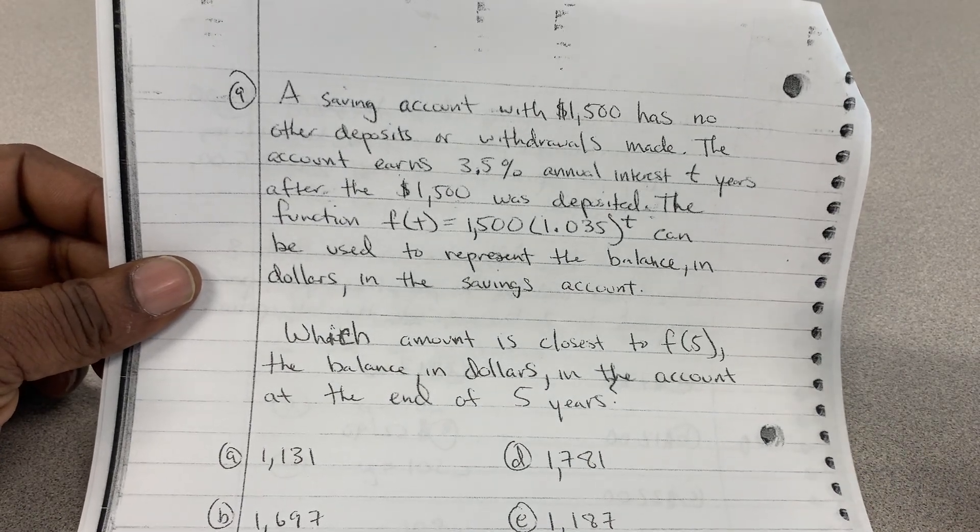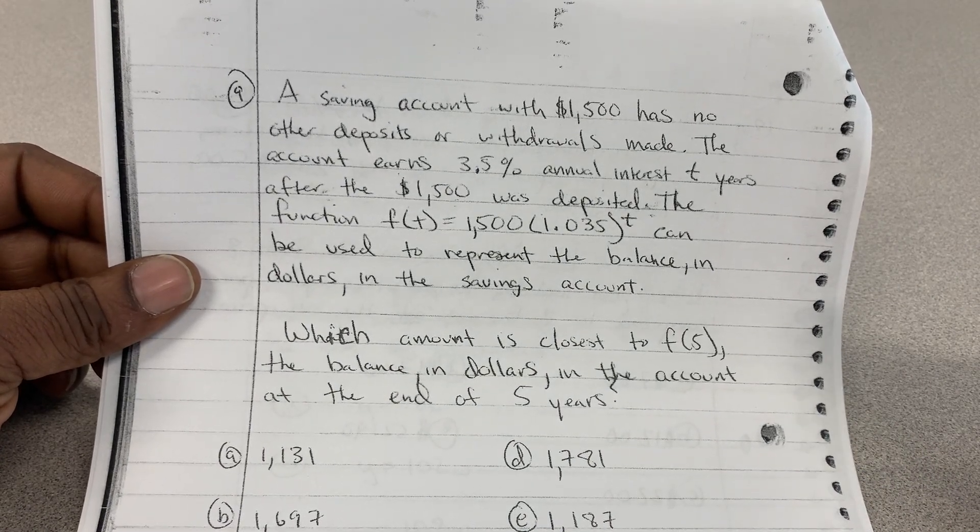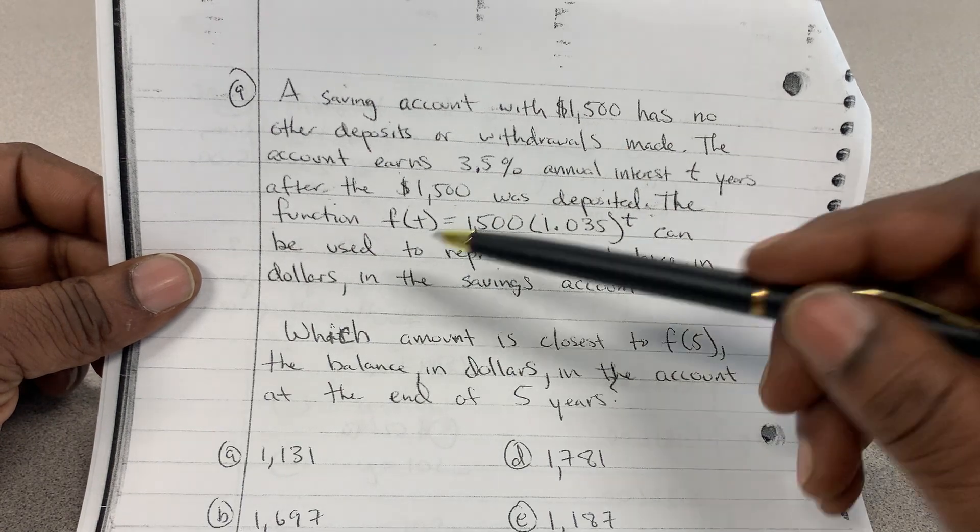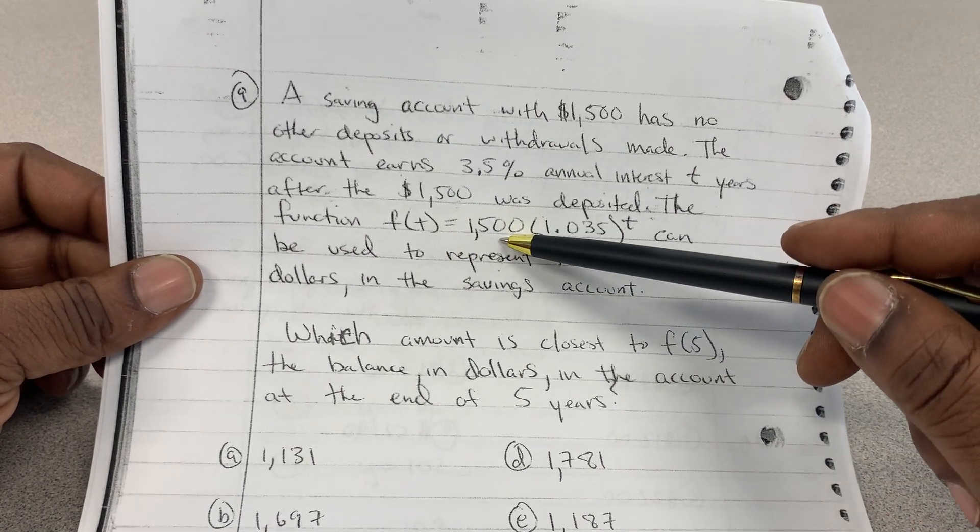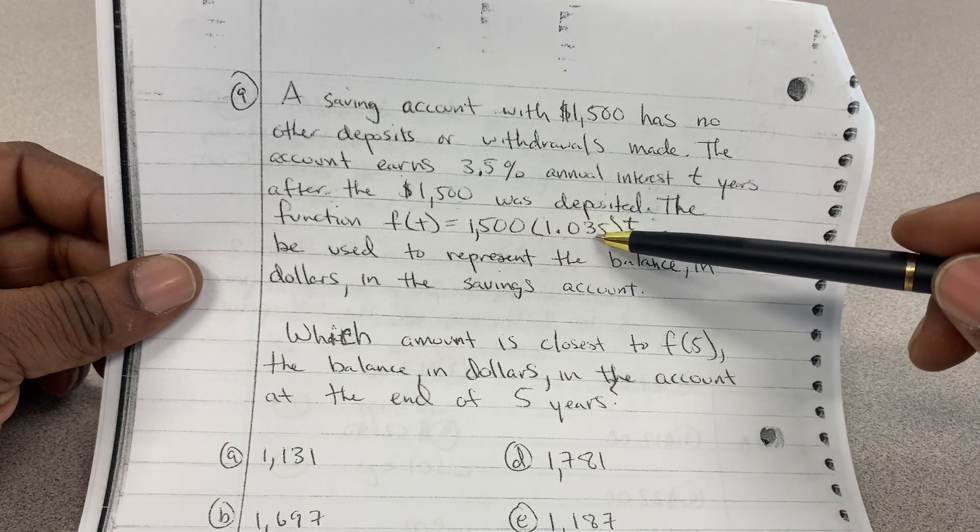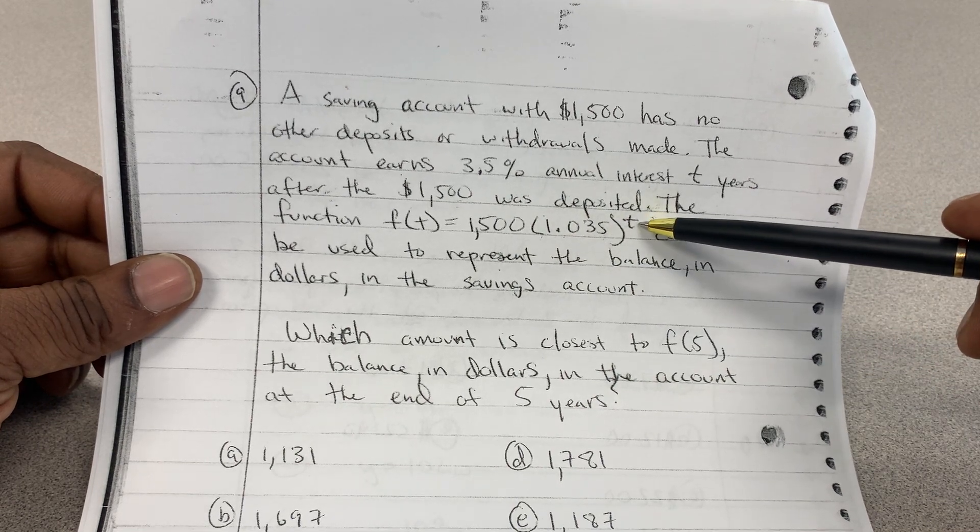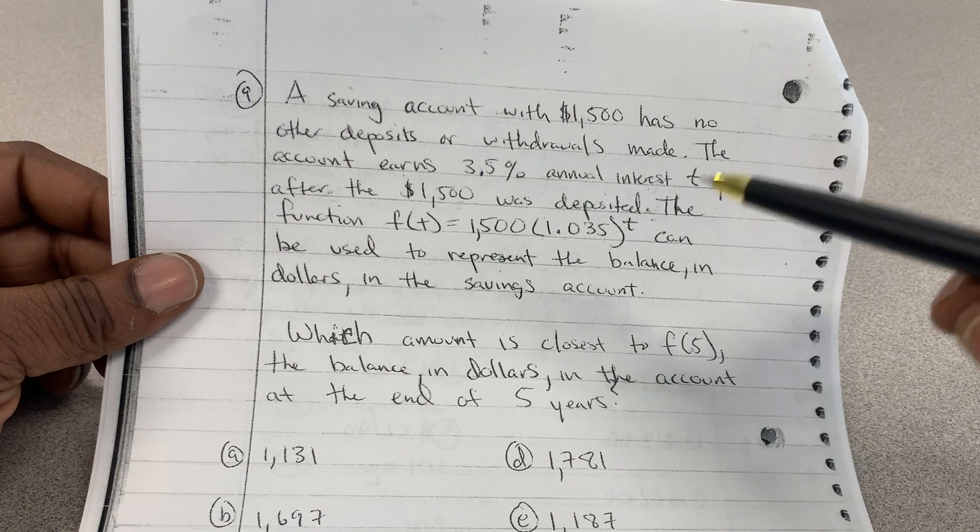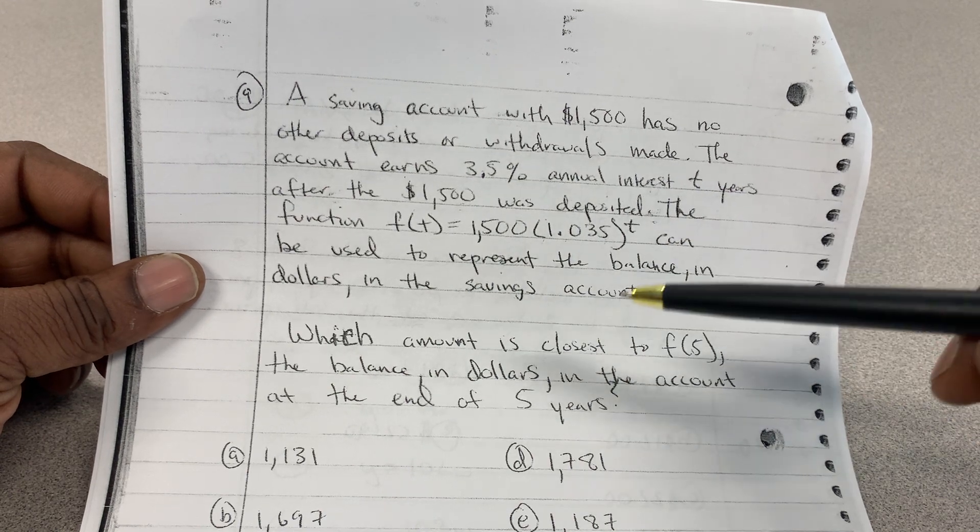Two years after the $1,500 was deposited, the function f(t) = $1,500 × 1.035^t can be used to represent the balance in dollars in the savings account.